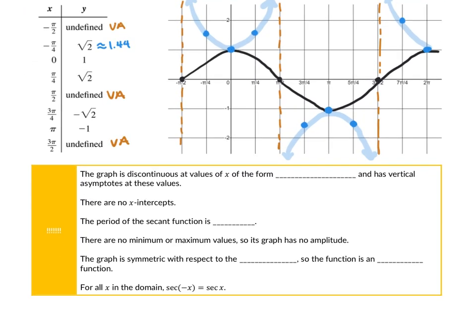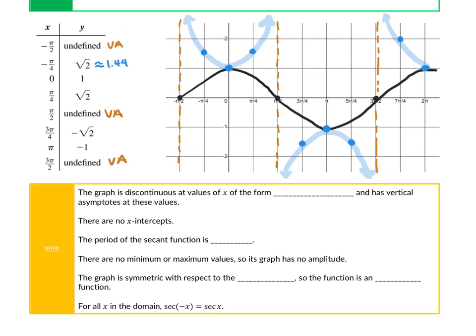This graph is discontinuous with vertical asymptotes of the form pi over 2 plus pi times n, so repetitions every pi distance. There are no x-intercepts, because x-intercepts are where the cosine function equals zero — which is exactly where the vertical asymptotes appear.